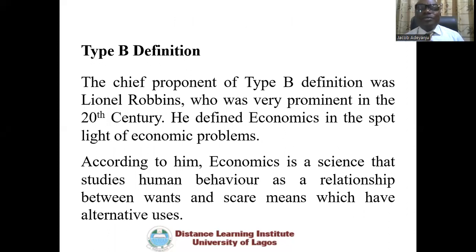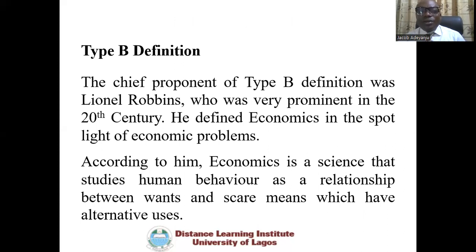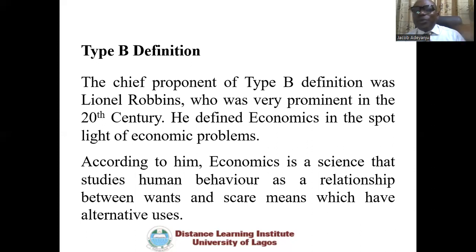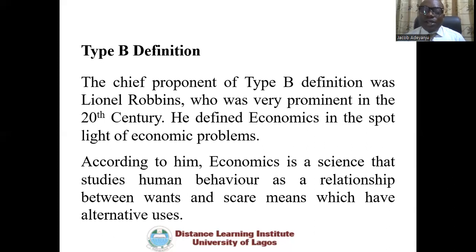What about the Type B definition? The chief proponent of Type B definition was Lionel Robbins, who was very prominent in the 20th century. He defined economics in the light of economic problems and scarcity. Specifically, Lionel Robbins defined economics as a science that studies human behavior as a relationship between ends and scarce means which have alternative uses. You might have previously been told why economics is regarded as a science and why it studies human behavior, and we will see this extensively as we progress.